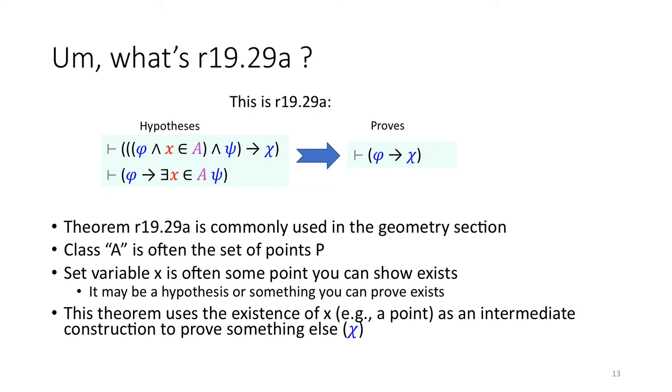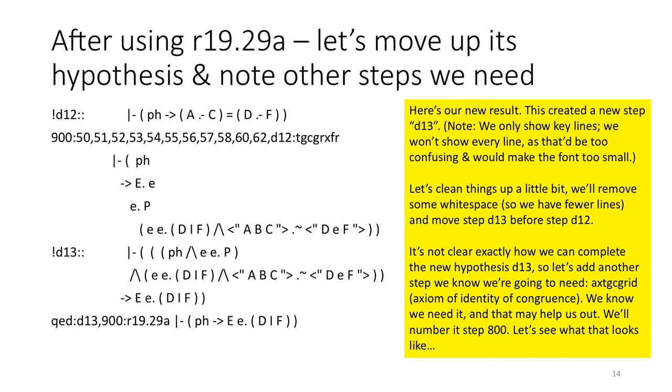So wait a minute, what's this about R19.29A? This is what R19.29A actually is. It's these two hypotheses, and if you can prove those two hypotheses, then you can prove this conclusion. Theorem R19.29A is commonly used in the geometry set. When it is, class A is often the set of points P, and the set variable X is often some point that you can show exists, maybe it's hypothesis, maybe it's something you can prove exists. And so this theorem lets you use the existence of X, for example some point, as an intermediate construction to prove something else, chi.